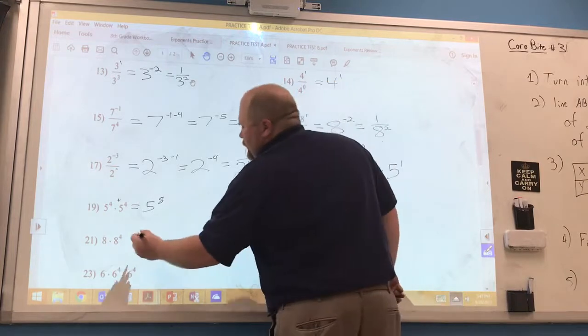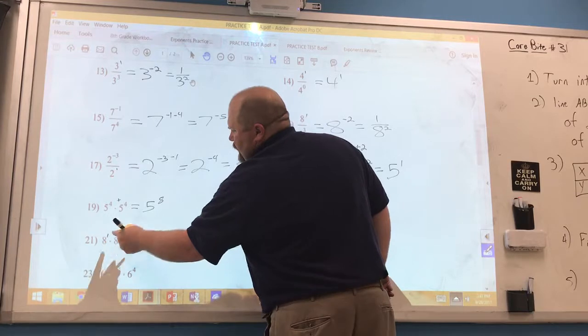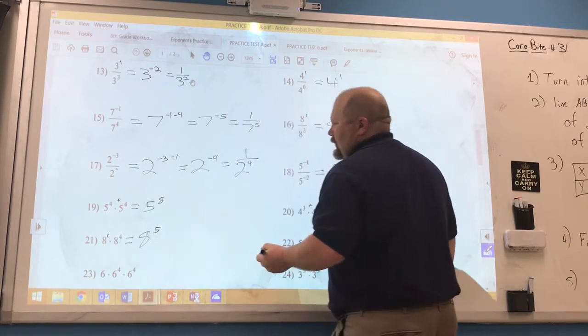Number 21, some students make the mistake and think this is 8 to the 4th, but they forget about the understood 1, so it is really 8 to the 5th.